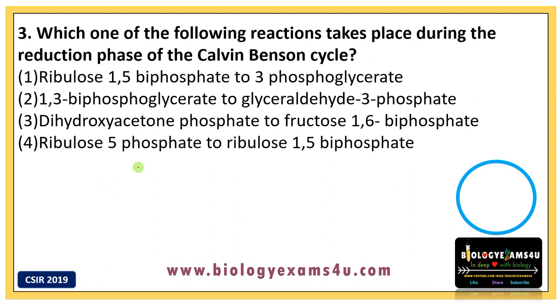This is a topic from photosynthesis, and you should have thorough knowledge of basic topics from plant and animal science like photosynthesis and cellular respiration — you can expect at least three to five questions from this topic. The answer is: 1,3-bisphosphoglycerate is converted to glyceraldehyde-3-phosphate, where the reduction happens. Let's have a quick look at the Calvin cycle.